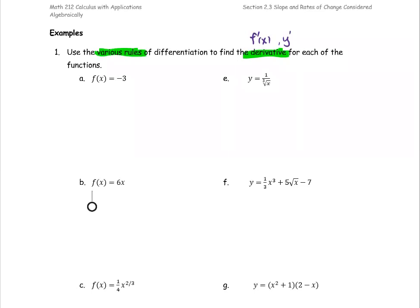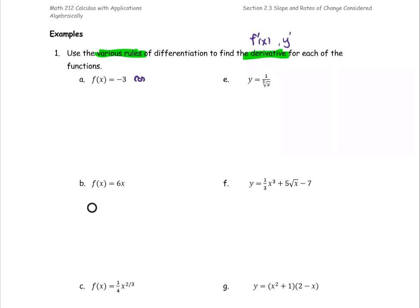For the first one, the function f(x) equals negative 3. So this is a constant function. Think about the behavior of the graph - this is a horizontal line. For the horizontal line, the slope is zero. And again, the slope is the derivative. That means for part a, the derivative is zero.